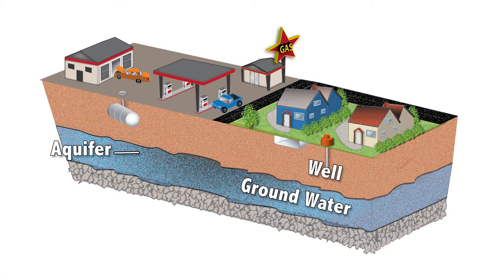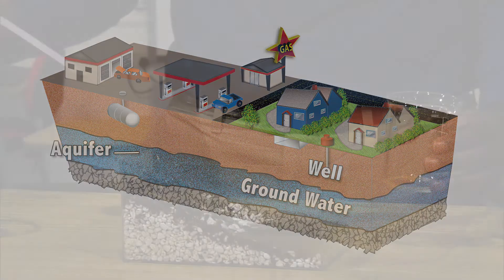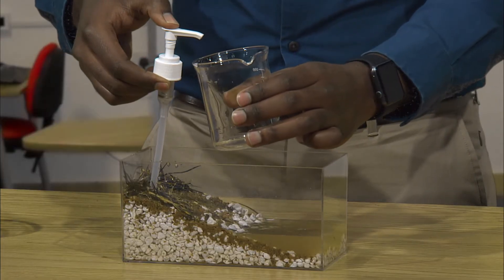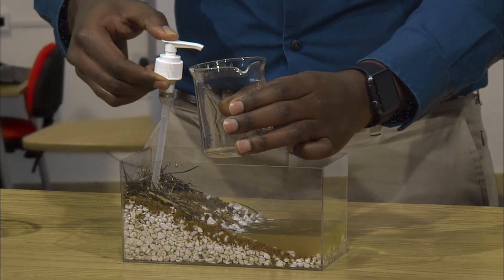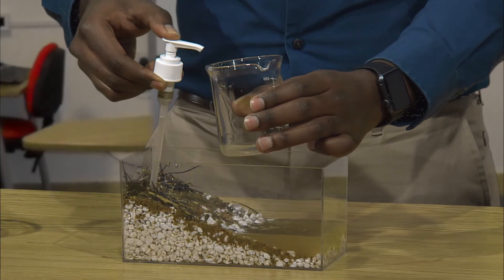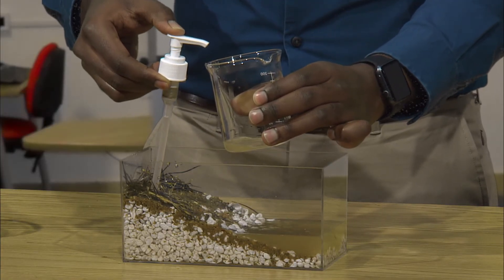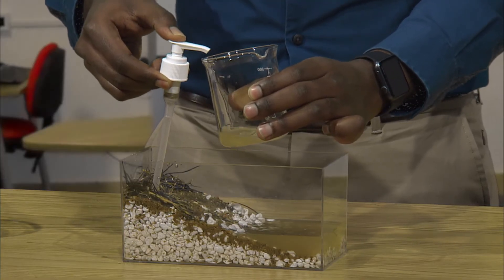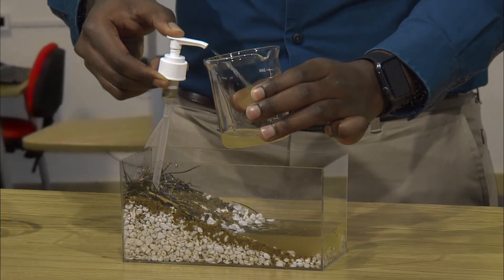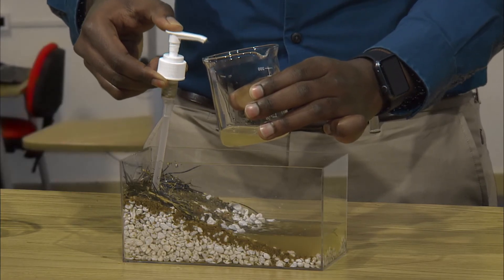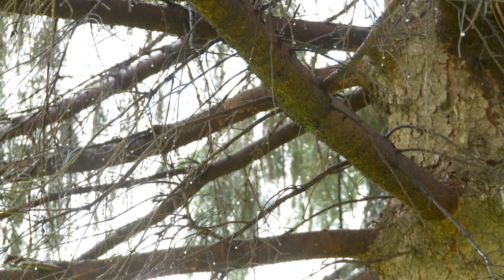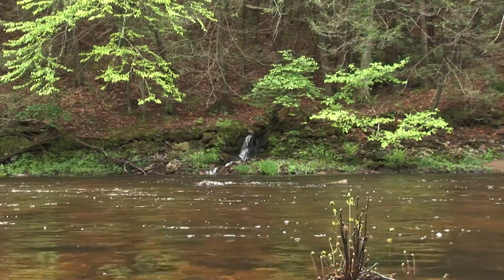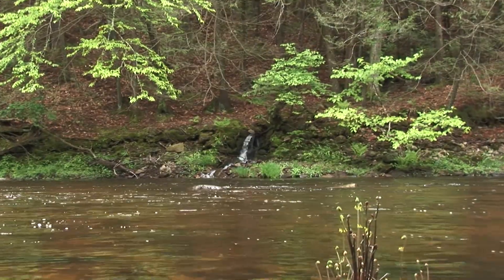Groundwater is used for drinking water, industry, and agriculture. To obtain the water, I need to drill a well deep enough to penetrate the water table. A well is essentially a straw sucking water out of the aquifer. I will use a spray pump to represent a well. Pumping a well pulls down the water table around the well and diverts flow to the well. You can see the water being drawn up into the spray pump as I pump the well and the water level in the aquifer goes down. Rain and snow recharges the aquifer. In Connecticut, our precipitation averages about four inches per month and keeps our groundwater and surface water systems generally full all year round.